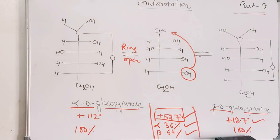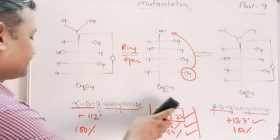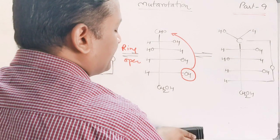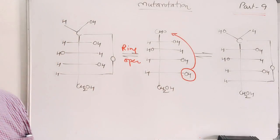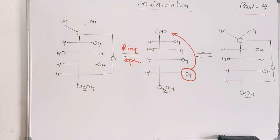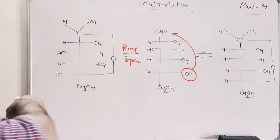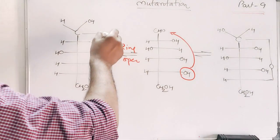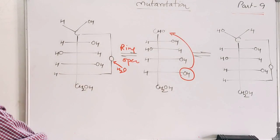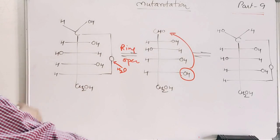A second important point is that mutarotation is catalyzed by acid and base. Mutarotation is catalyzed by amphiprotic solvents — solvents which can donate a proton and also accept a proton. Water is a good example of an amphiprotic solvent. Let's see what an amphiprotic solvent does: water can donate H⁺ to the ring oxygen and can also abstract a proton.